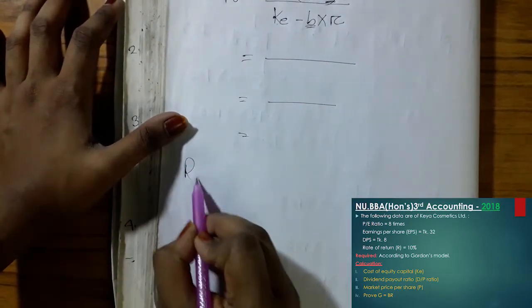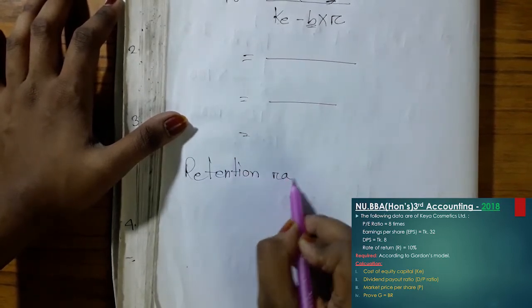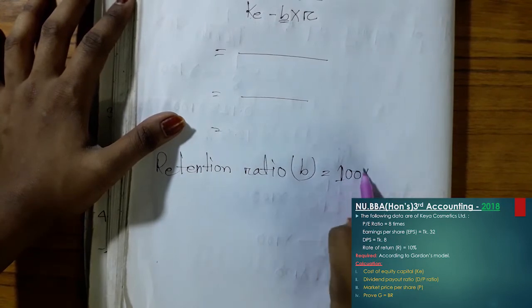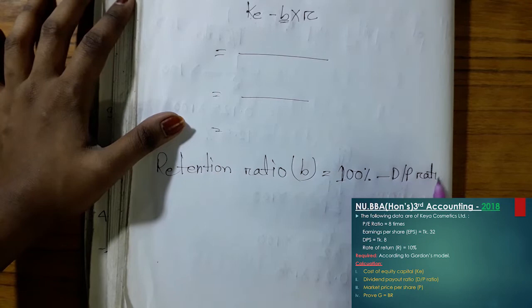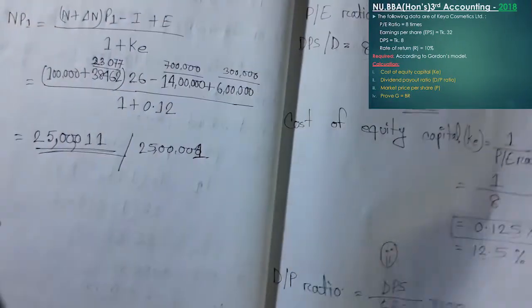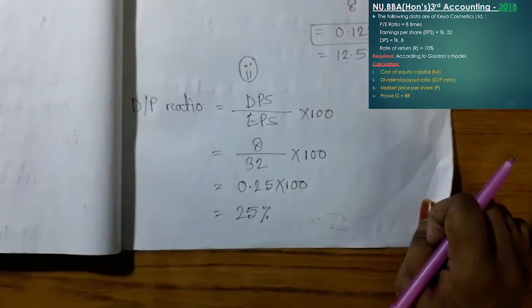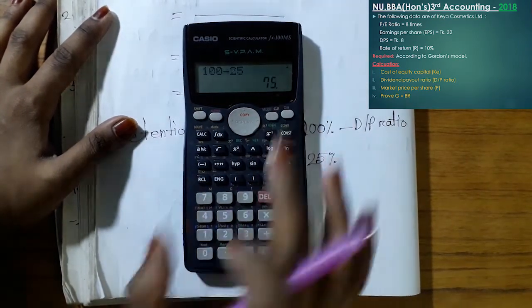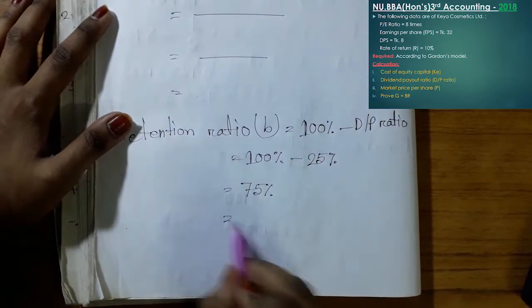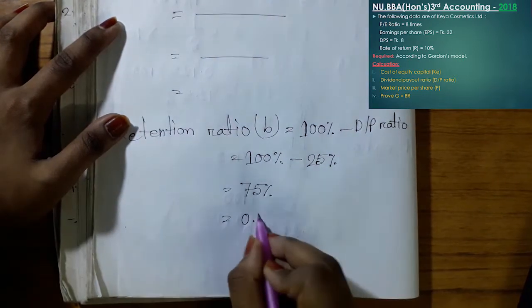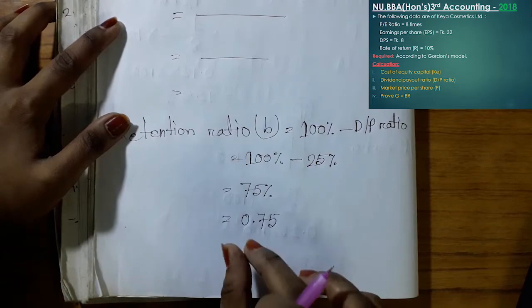The retention ratio is B. B equals 100% minus DP ratio. The DP ratio is 25%, so retention ratio B equals 100% minus 25%, which gives us 75%, or 0.75. So our retention ratio is 0.75.